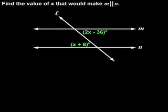We can see that the angles that are marked in the diagram are alternate interior angles. Therefore, in order for line m to be parallel to line n, these angles must be congruent.